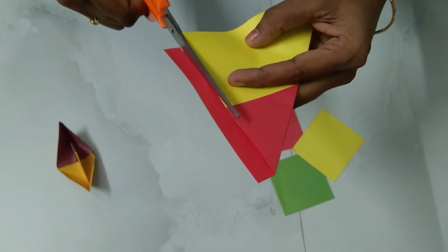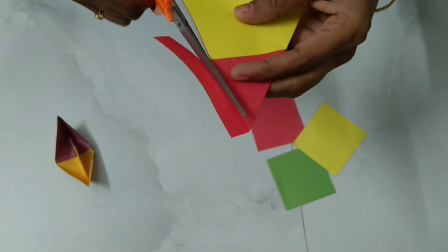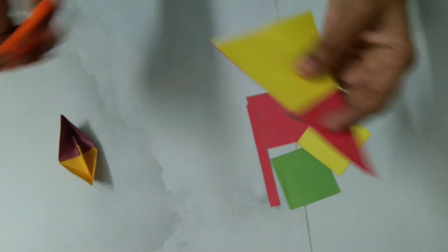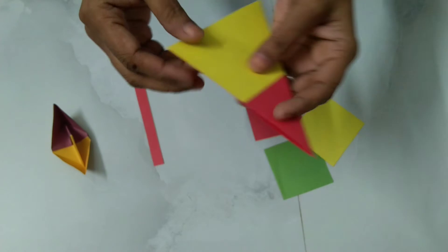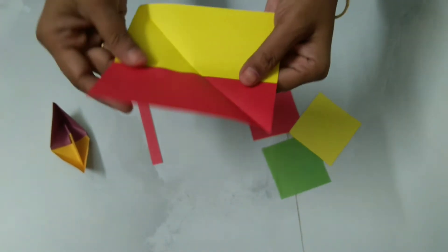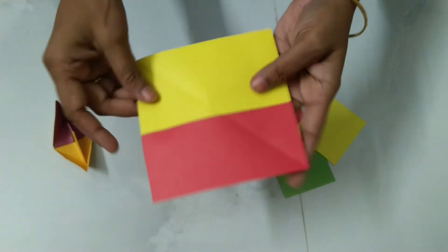Dear students, take care while using the scissor. If someone elder is there at home, you can take help of that person. Now see, this paper is perfectly a square.